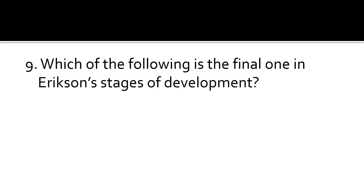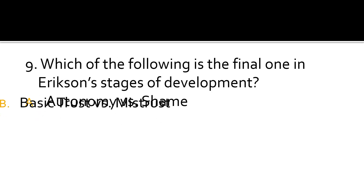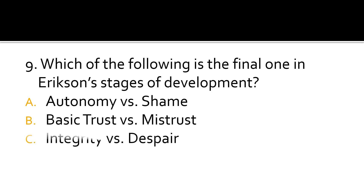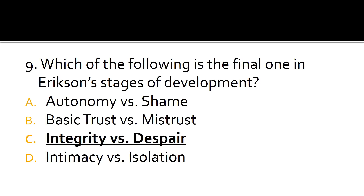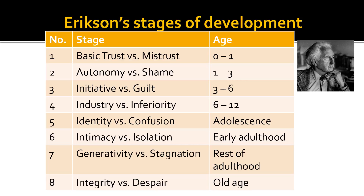Question 9. Which of the following is the final stage in Erikson's stages of development? Is it autonomy versus shame, basic trust versus mistrust, integrity versus despair, or intimacy versus isolation? The correct answer is C: integrity versus despair. The eight stages of development according to Erikson start from basic trust versus mistrust and end with integrity versus despair as the final stage.